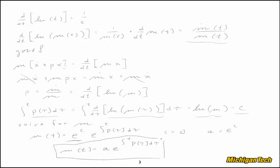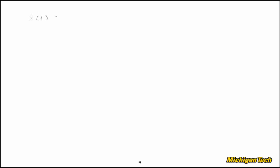Returning to our example where p(t) = 4t, the integrating factor m(t) = alpha · e^(∫4τ dτ) = alpha · e^(2t²). That's how we get the integrating factor without magic.